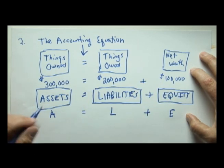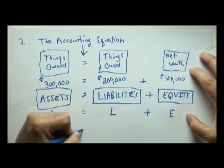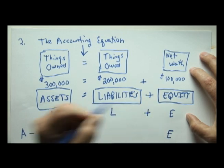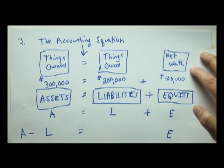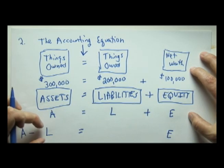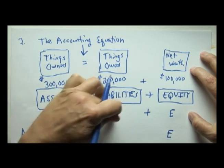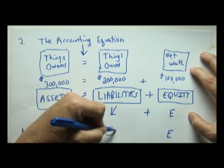If we subtracted L from each side of the equation, we would have A minus L equals E, and this is the same fundamental equation, except we've subtracted L from the left side and we've subtracted L from the right side.